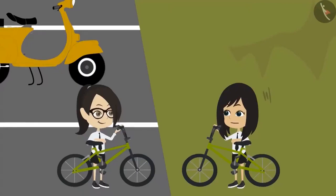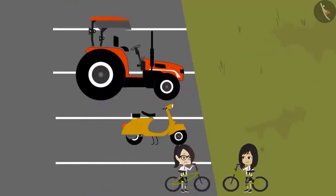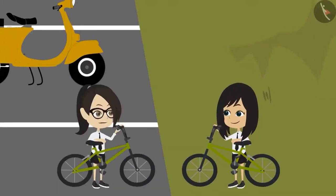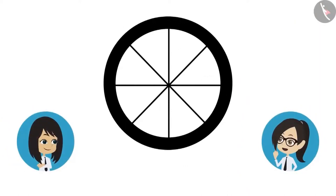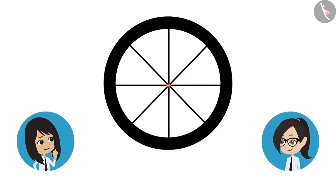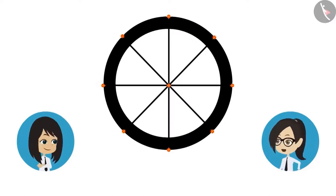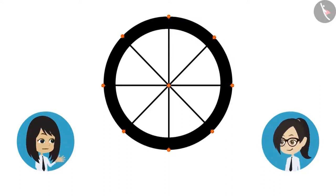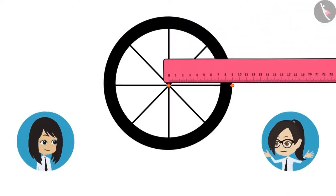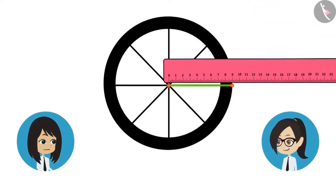Let's measure these four tyres and then tell Sir. Let's measure the tyre of our bicycle first. We have to measure its radius — the distance between the centre and the boundary. Here is the centre of the wheel. Measure to any point on the boundary; the measurement will be equal because the centre is at an equal distance from all points. The radius of the wheel of the bicycle is 9 inches.